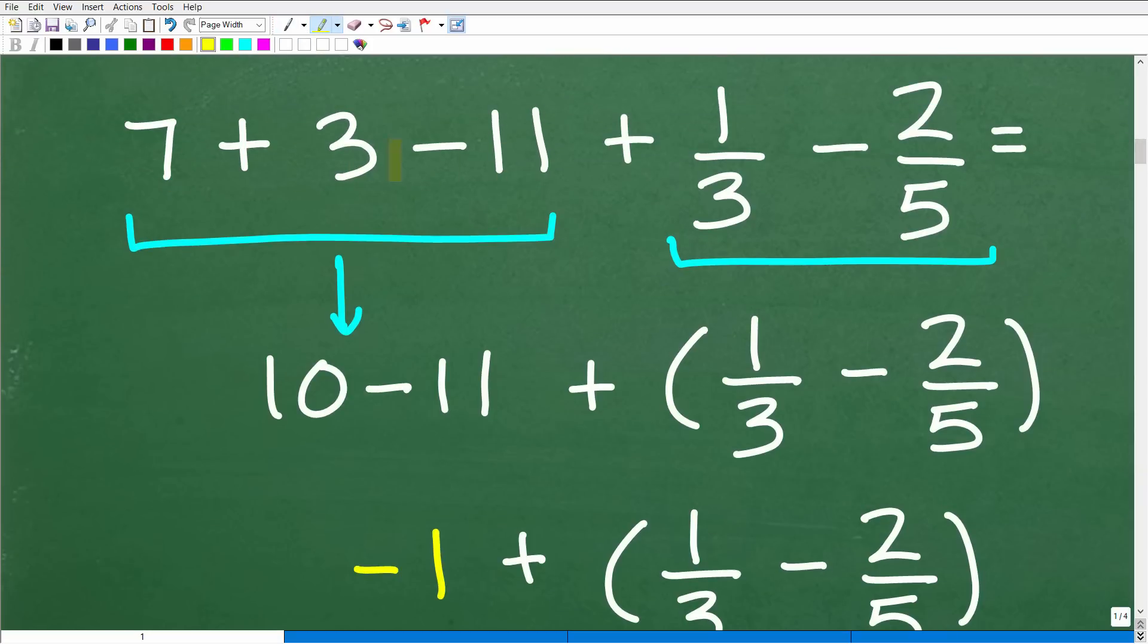So I'm going to go ahead and get the answer to this, and then we'll deal with the fractions, and then we'll combine these two answers together. All right, so let's go ahead and get into it right now. Here we have 7 plus 3 minus 11. 7 plus 3 is 10. 10 minus 11 is negative 1. Again, you're going to need to know some positive and negative number rules in order to do this problem. So 10 minus 11 is the same thing as 10 plus a negative 11, which of course is negative 1.